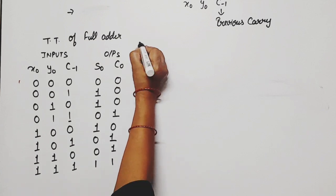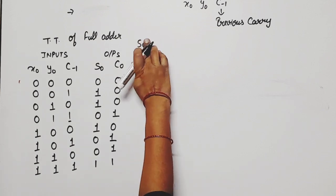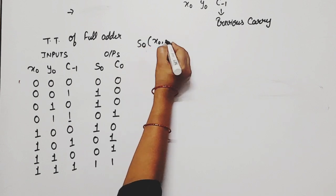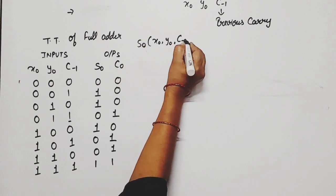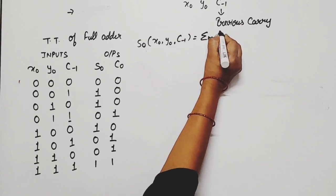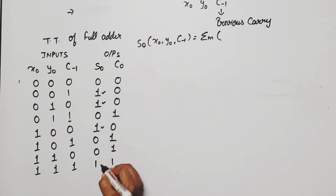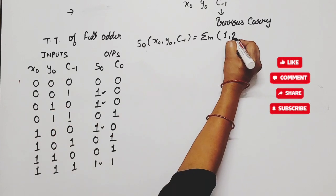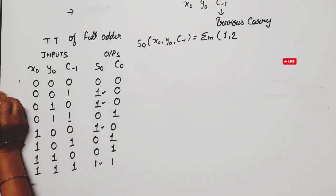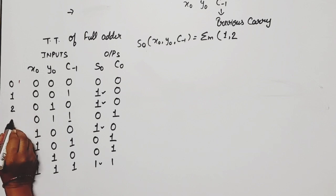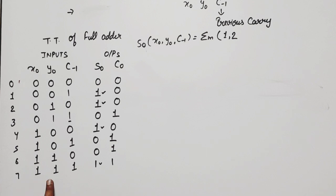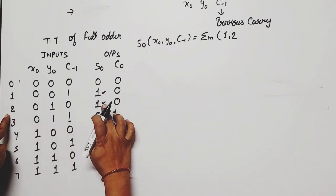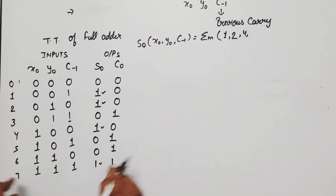Expression for sum s0, s0 is function of x0, y0, and c-1 is equal to summation of minterms. Where is 1? This, this, this, and this. Decimal equivalent of these numbers. 0, 0, 1 means this is 1. 0, 1, 0 means 2. If I write decimal equivalent, then what will it be? 0, 1, 2, 3, 4, 5, 6, 7. This is decimal equivalent of these binary combinations. So 1 is high, 2 is high, then 4, and last is 7.